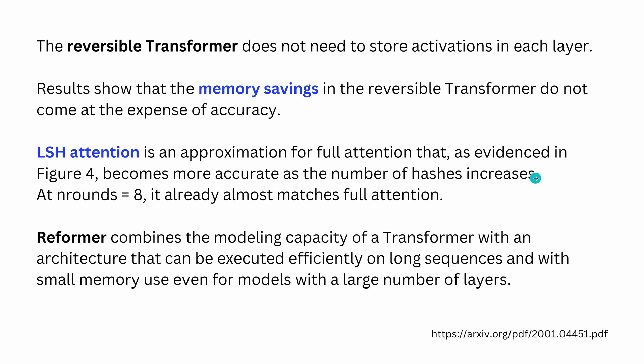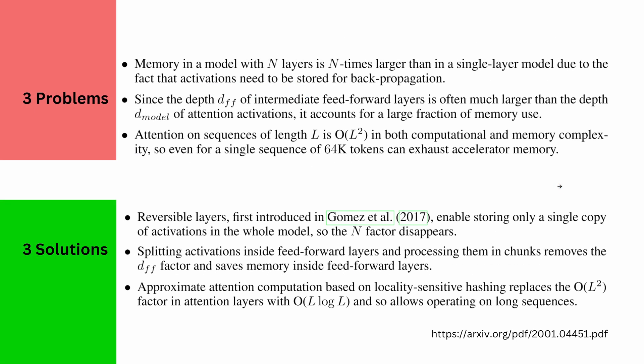And of course, we approximated our full self-attention mechanism now with hashed attention mechanism. As evidence, yes, it becomes more accurate as the number of hashes increase. Again, the typical simulation: the more ends you have, the better your simulation, the better your Fourier will converge. So a reformer, or the reversible transformer, combines the model capacity of a transformer with the architecture that can be executed efficiently on long sequences, since now it's not L squared, and with a small memory use. This is the beauty.